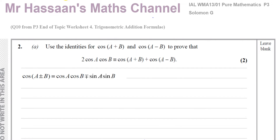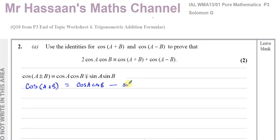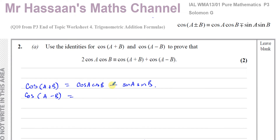They want us to show that when you add cos(A+B) and cos(A−B) you end up with 2cosAcosB. So I'll write cos(A+B) in its expanded form: cos(A+B) = cosAcosB − sinAsinB. And I'll also write down cos(A−B), which is cosAcosB + sinAsinB.